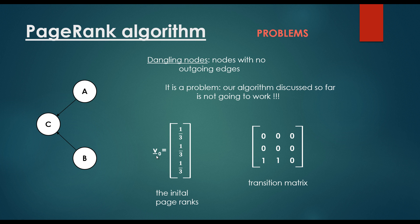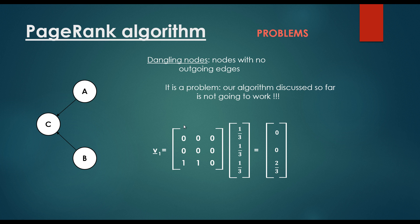If we want to calculate V1, which is the next iteration page rank, we have to multiply the transition matrix with the original vector. We end up with 002 divided by 3. It means that A has a page rank 0, B has a page rank 0, C has a page rank 2 divided by 3.